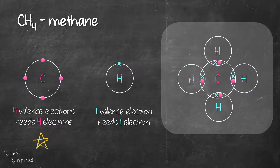With that, we're done drawing the dot and cross diagram. Hydrogen already has its full valence shell and so does carbon. Carbon has a total of eight and is octet.